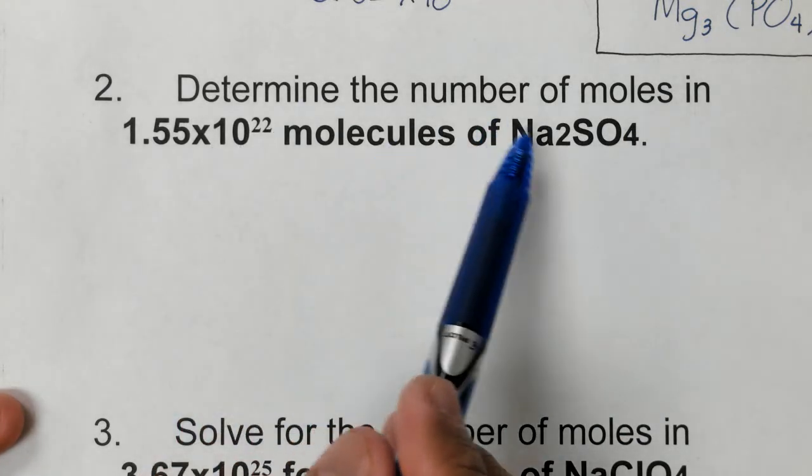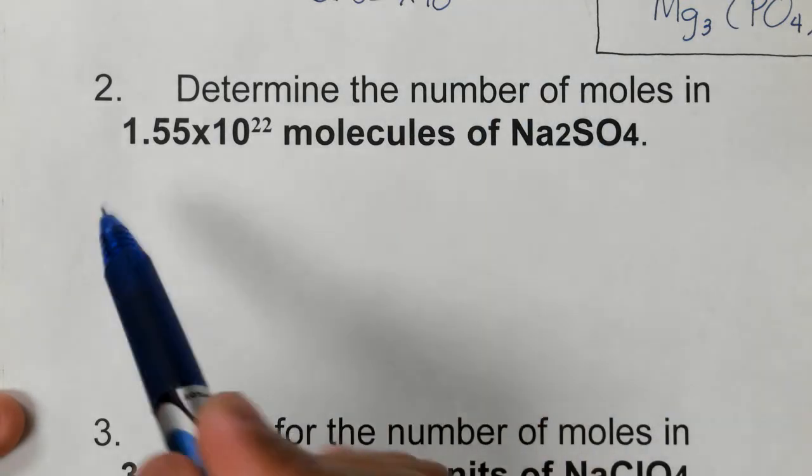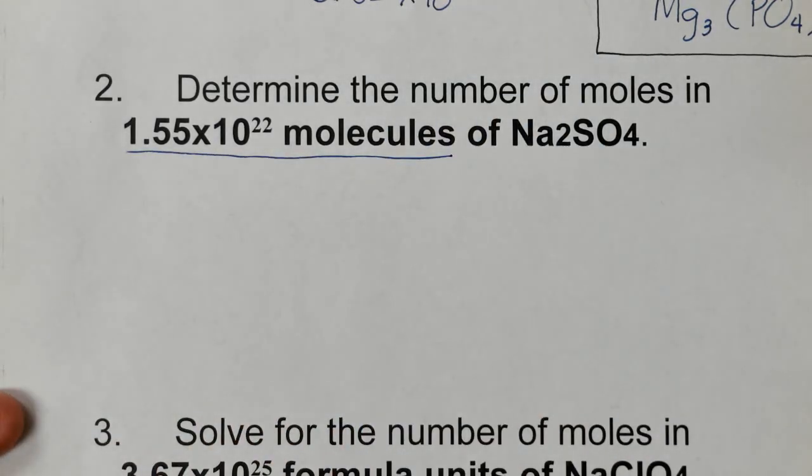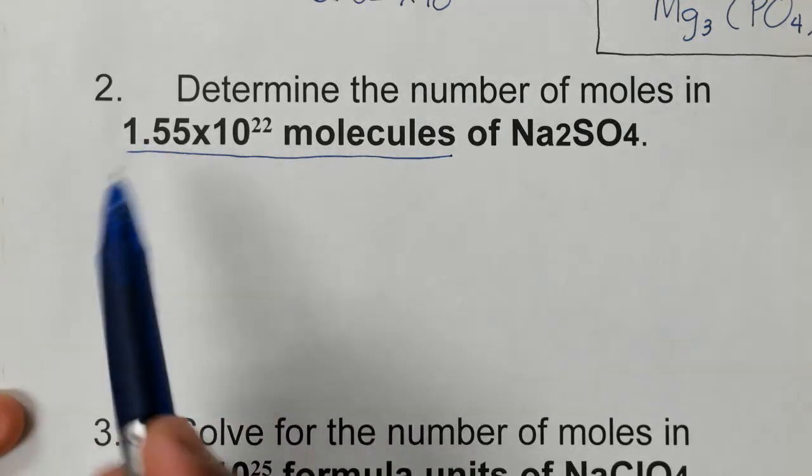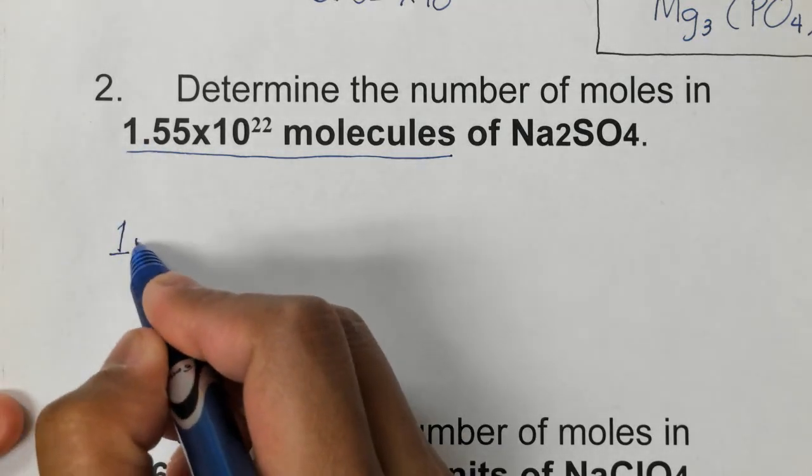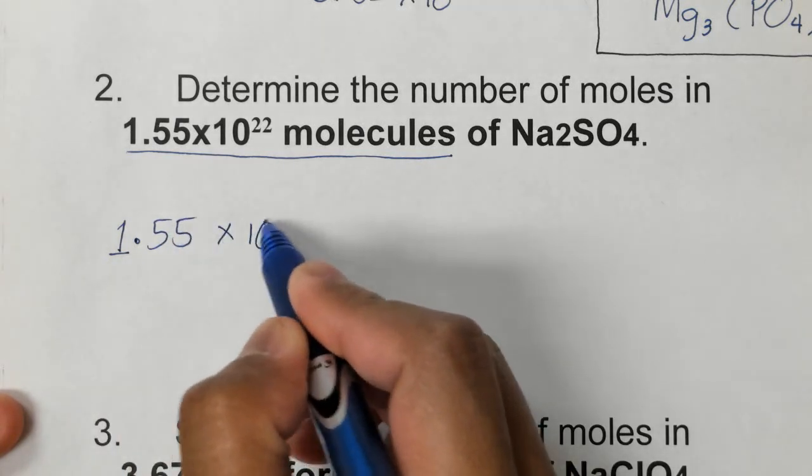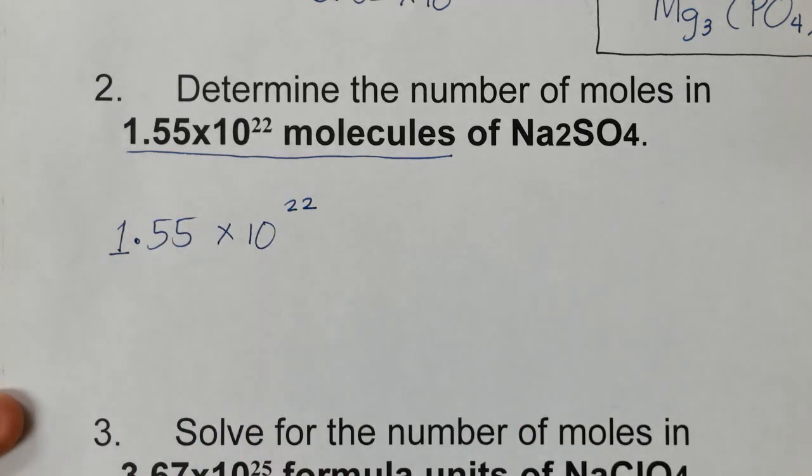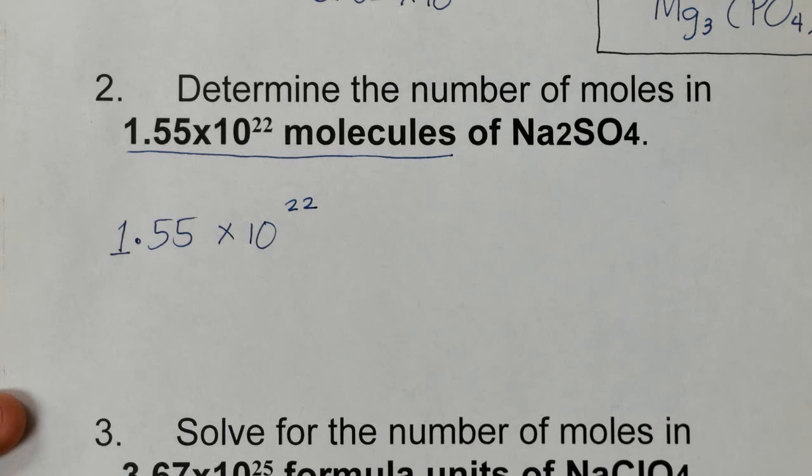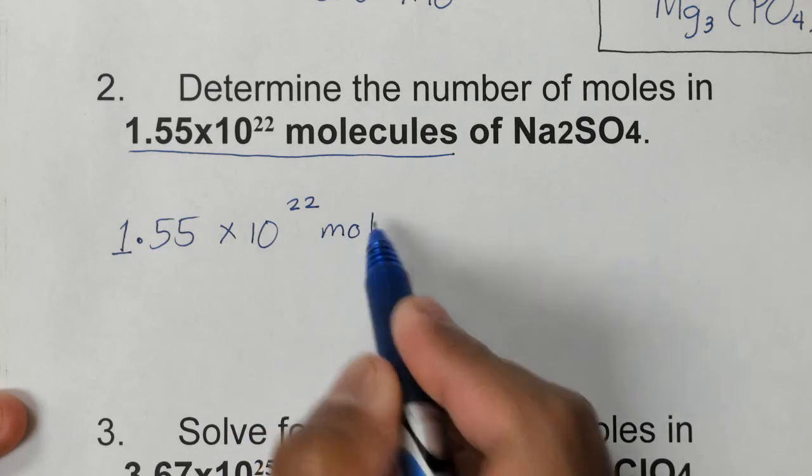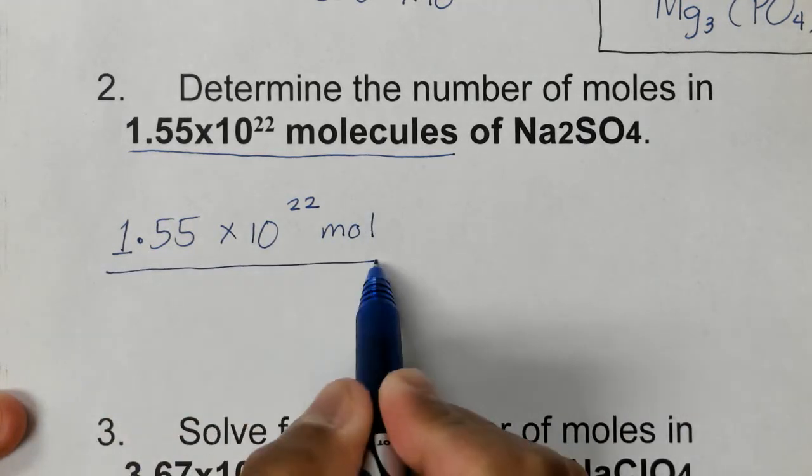So now for number two, we are to determine the number of moles in 1.55 times 10 to the 22 molecules of Na2SO4. So the whole thing here is our given, which you see a number and a unit. So all we need to do is write that down. So that's 1.55 times 10 to the 22.